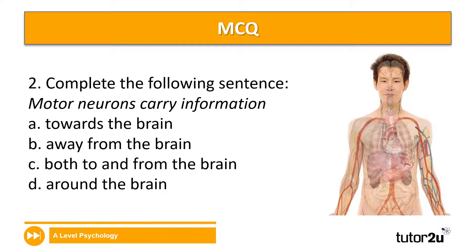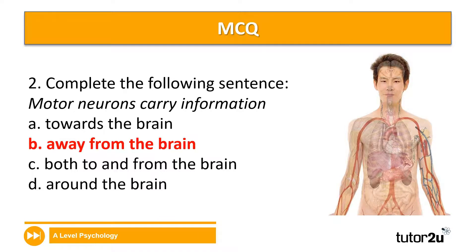Next MCQ: complete the following sentence — motor neurons carry information. Is it A, towards the brain; B, away from the brain; C, both to and from the brain; or D, around the brain? For motor neurons it's B, away from the brain, because they travel from the CNS into the PNS. In relation to these two MCQ questions, motor neurons are often described as being efferent — efferent means conducting outwards.